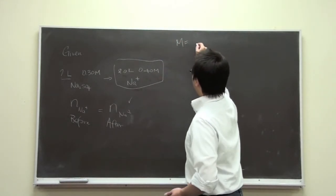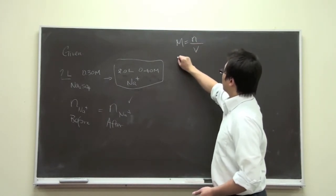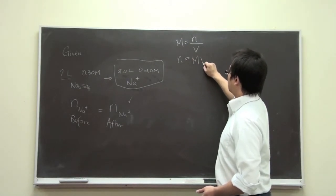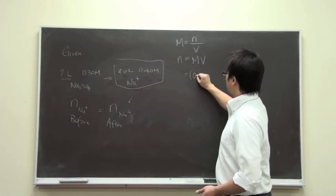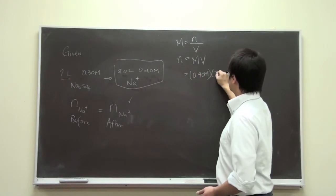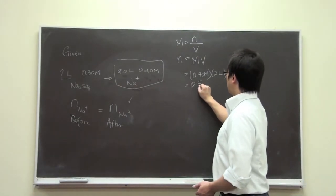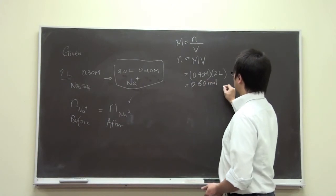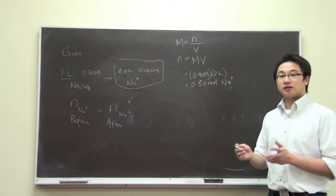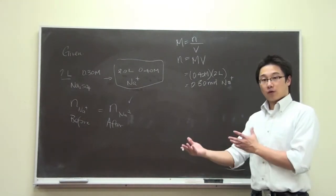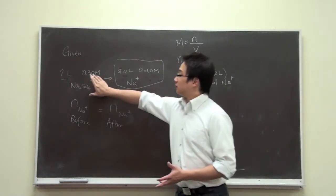So remember that molarity is equal to mole over the volume. And if we want to find out the mole, then mole is equal to molarity times the volume. Then we have the molarity 0.40 molar times 2 liter. And that would give us 0.80 moles of sodium ion. So this is the amount of sodium ion that we have before and after.